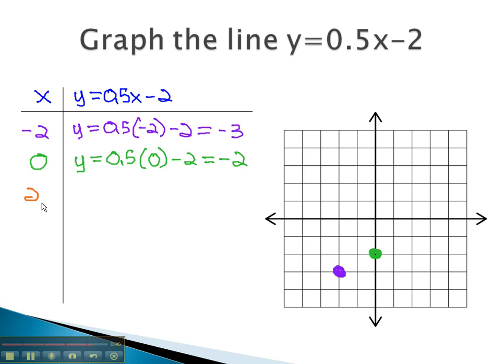Let's plug 2 into the equation. Now, we have y = 0.5 times 2, minus 2. Working this out, gives us y = -1.